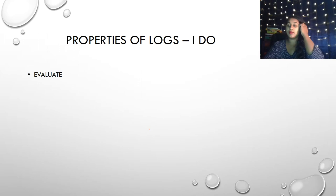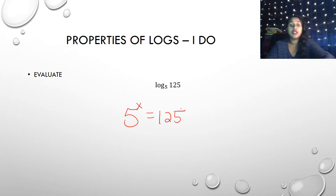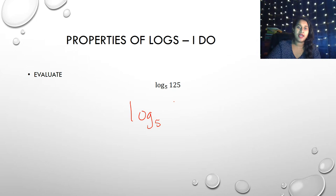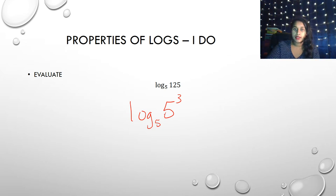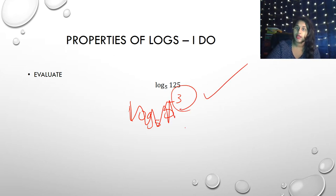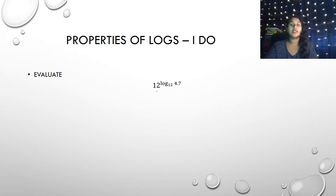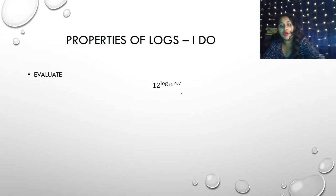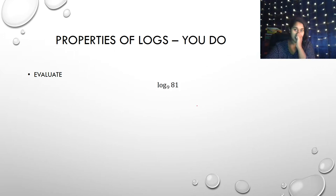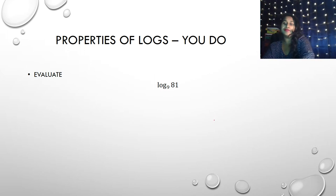Here are two examples using these properties. Log base 5 of 125 — I could rewrite 125 as 5 cubed, so this is log base 5 of 5 cubed. The bases match, so I cross all that out and I'm left with 3. For the next example, the base matches again, so I cross all that out and I'm left with 4.7. Here are some for you to try — what's another way to write 81? Hint: it has to do with 9.